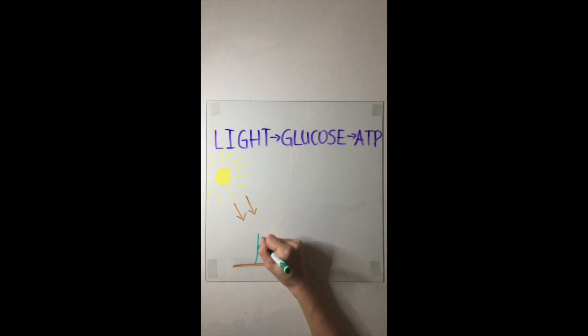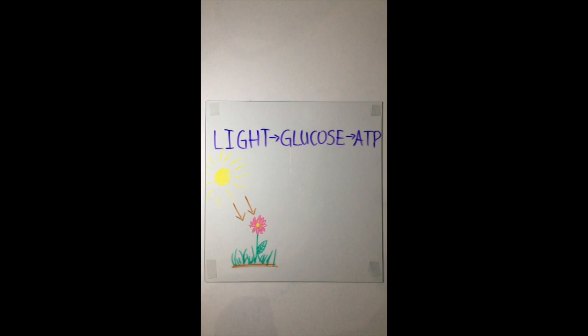In this diagram, we can see that light, in most cases the sun, can be turned into glucose with the process of photosynthesis. Animals, like this rabbit, can then use that glucose when they've digested the plant to produce energy, or ATP, using a process called cellular respiration.